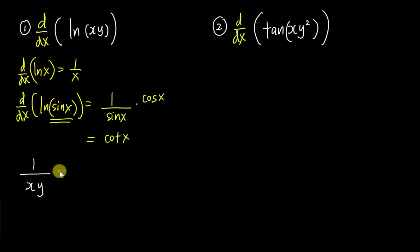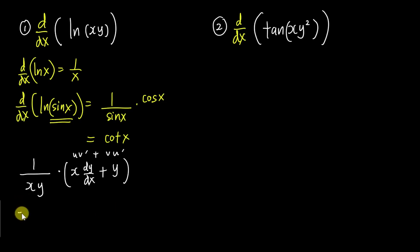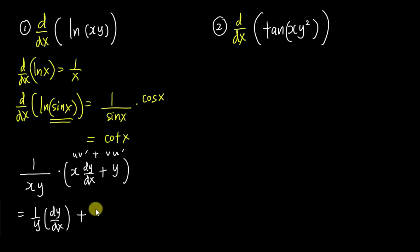Then what we need to do is differentiate the xy using the product rule. Let x be u and y be v. Copy u and differentiate v: x times dy/dx. Plus copy v and differentiate u: y times 1. Then multiplying 1 over xy into both terms: x and x simplify to give (1/y)·(dy/dx), and 1 over xy times y simplifies to plus 1 over x. That will be the answer.